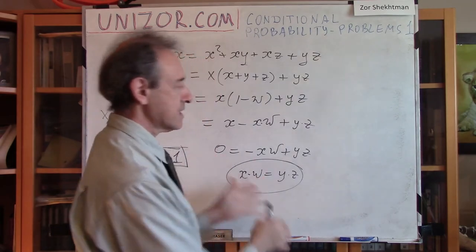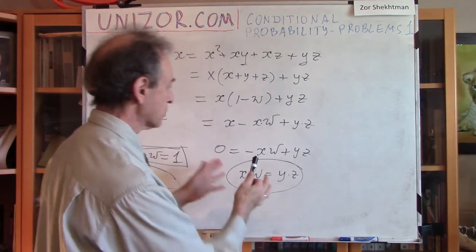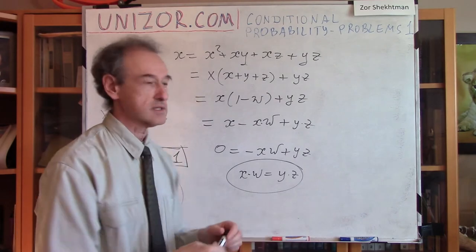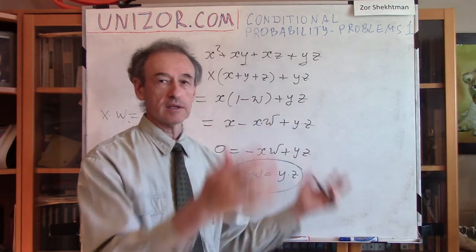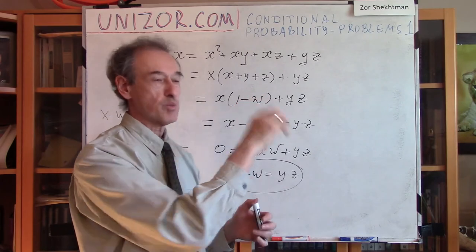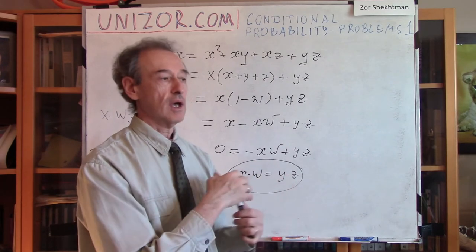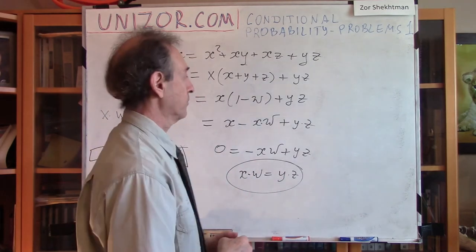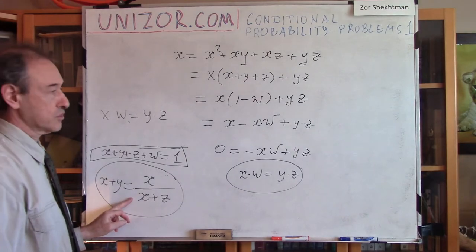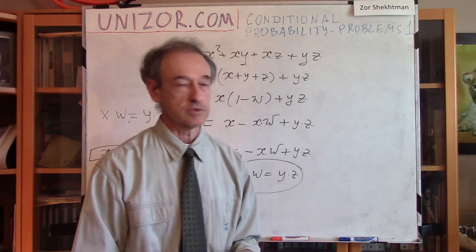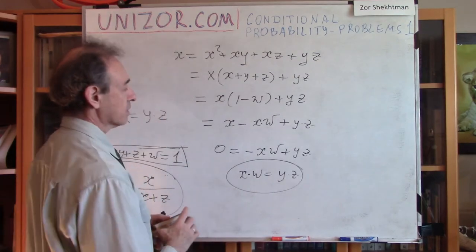As you see, the proof itself is very simple. What takes some time is to arrive at this purely algebraic exercise by introducing events X, Y, Z, W. Instead of A, B, and the entire space omega, we introduced X, Y, Z, W which have no intersection. We expressed original events A and B in terms of X, Y, Z, W, and expressed their independence in this particular way.